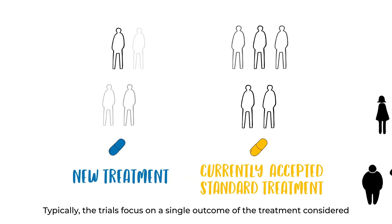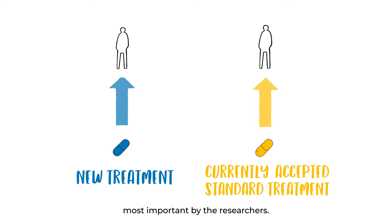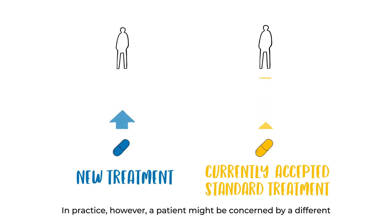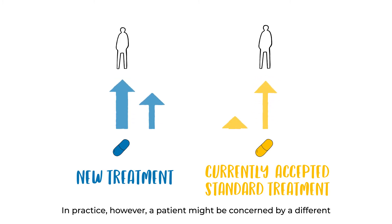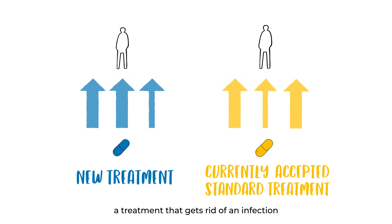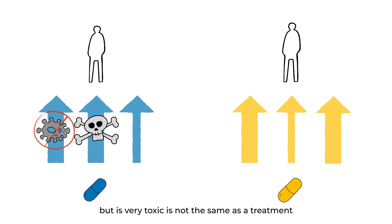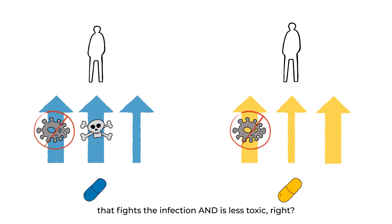Typically, the trials focus on a single outcome of the treatment considered most important by the researchers. In practice, however, a patient might be concerned by a different or even several outcomes of the treatment simultaneously. A treatment that gets rid of an infection but is very toxic is not the same as a treatment that fights the infection and is less toxic, right?